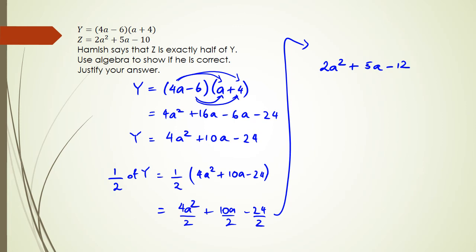And as you can see here, half of y is not exactly the same as z, because z is actually equal to 2a squared plus 5a minus 10, while half of y equals to that. So therefore, we can actually say Hamish is incorrect. So we just write a little statement.